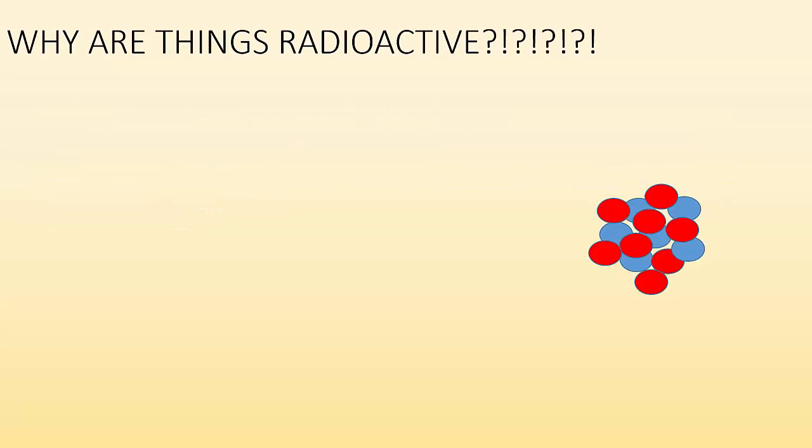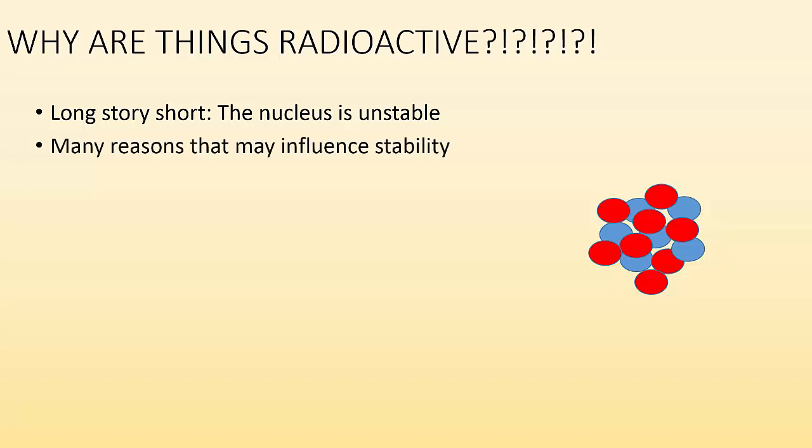Why are things radioactive in the first place? Long story short, the nucleus is unstable. That's why things are radioactive. You have an unstable nucleus. There's many reasons that may influence this stability, and we're going to talk about them.